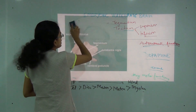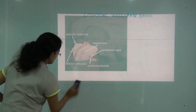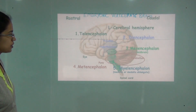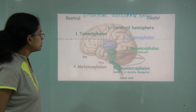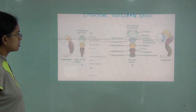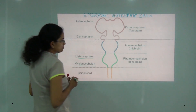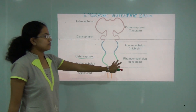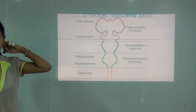Now let's move on to the last section of the embryonic brain — the rhombencephalon, or hindbrain. We will be talking about metencephalon and myelencephalon. Metencephalon converts into pons and cerebellum in an adult brain, and myelencephalon converts into the medulla oblongata. The rhombencephalon is the hindbrain, towards the posterior and inferior region of the brain.